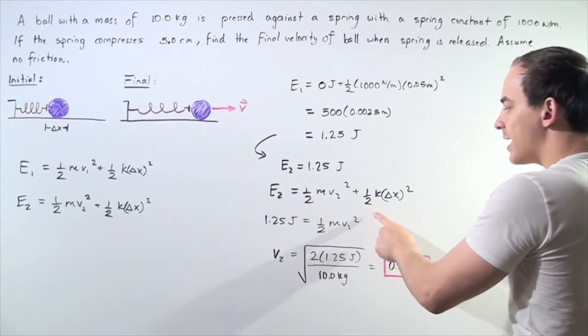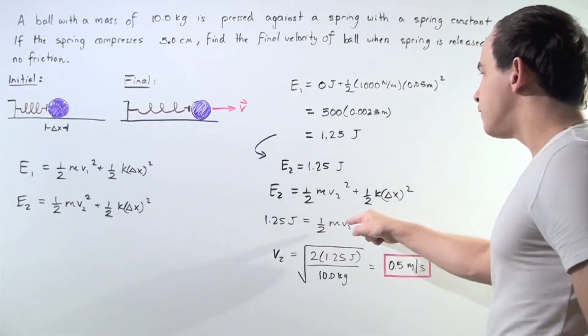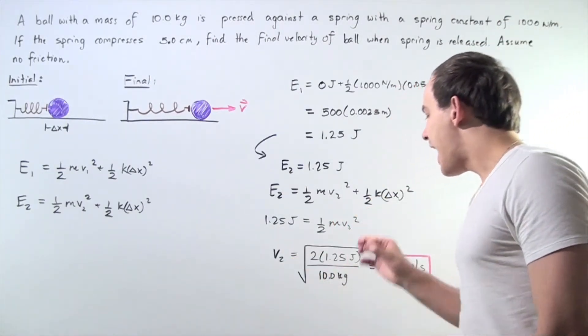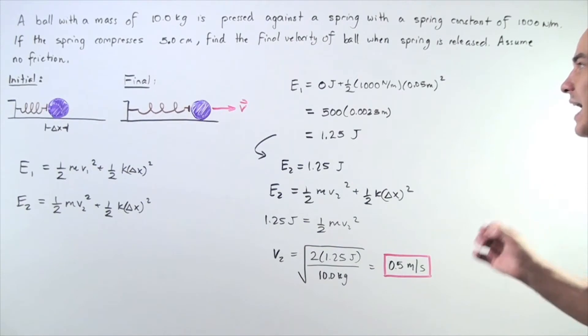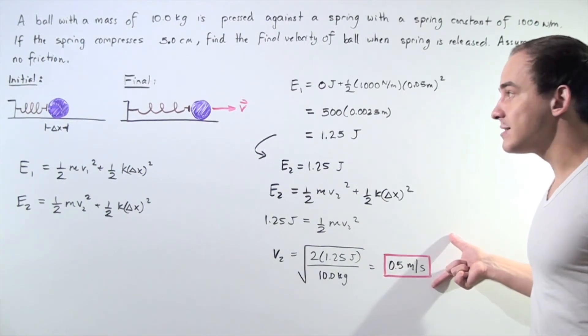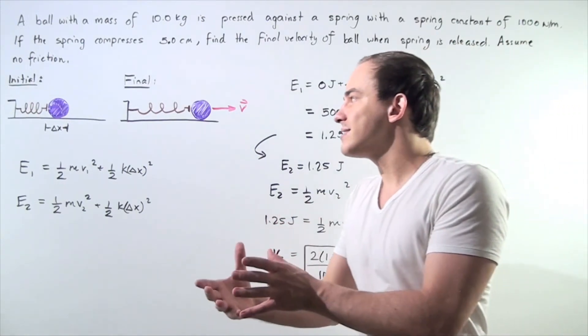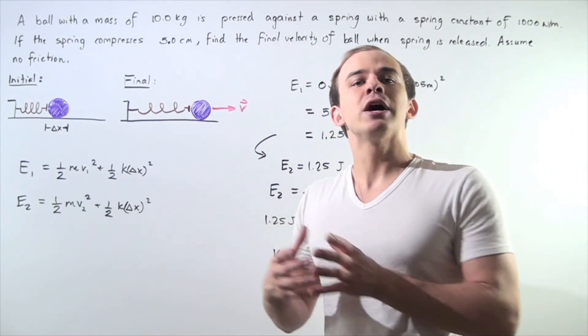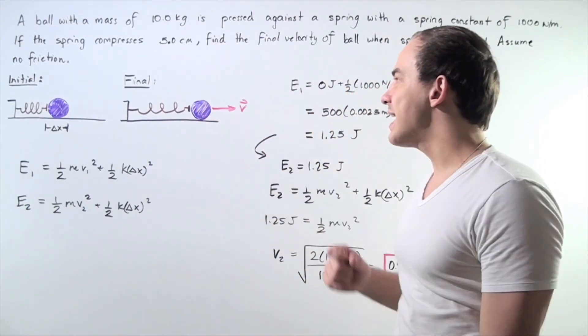And we're left with 1.25 joules is equal to the kinetic energy of the object, one-half mV2 squared. So we solve for our final velocity, V2, and we find a final velocity of 0.5 meters per second. So our object will have this velocity when all of the elastic potential energy is transformed into kinetic energy.